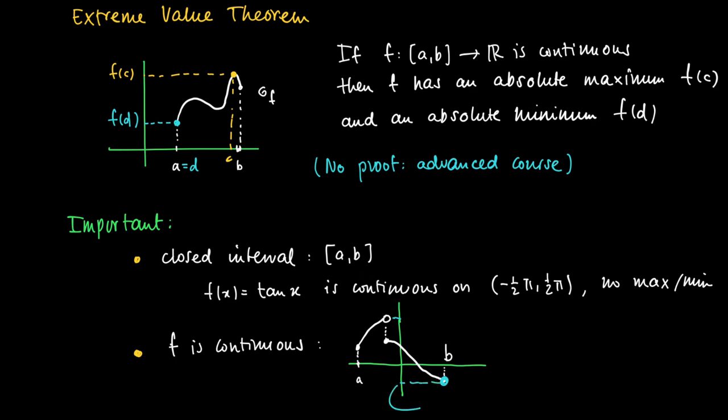So here we see a discontinuous function. So we have a jump up and a jump down. And although we have an absolute minimum in b, here we have a perforation, and this indicates that this value is not attained. So if we approach this point from the left, we still keep increasing the function value, but it has no absolute maximum.